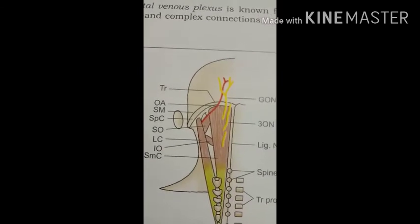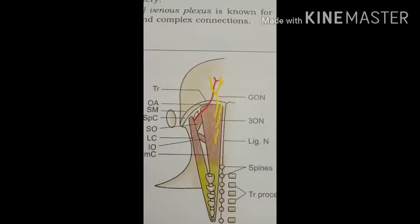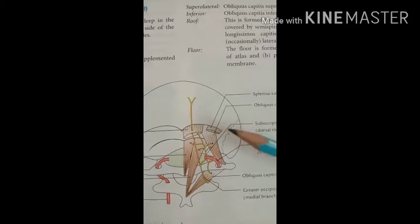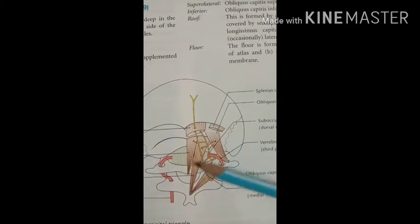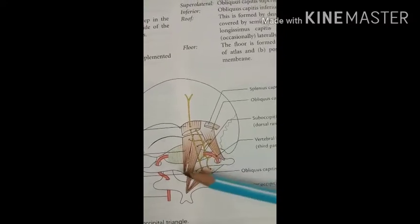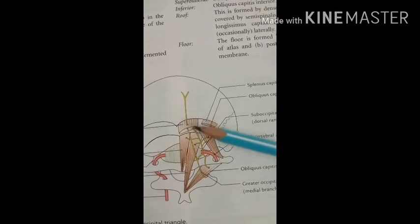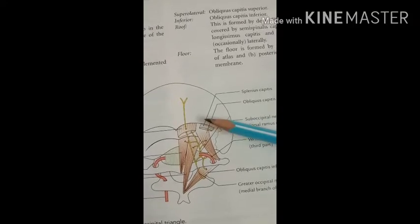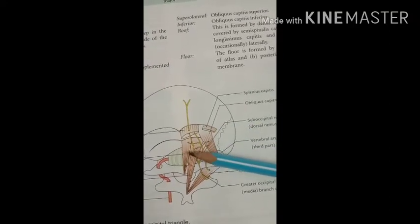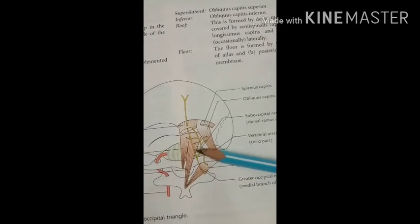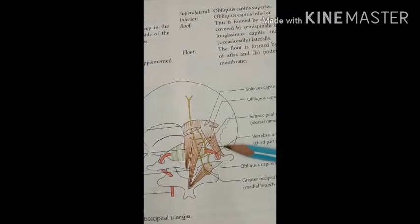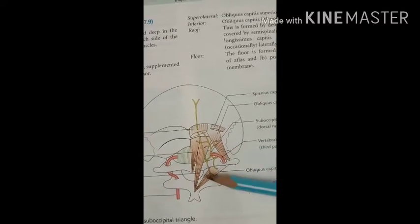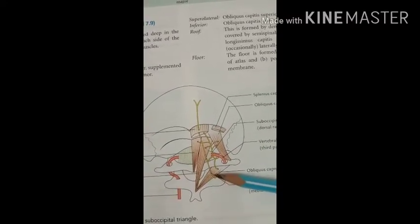After reflection of these two muscles, you observe the sub-occipital triangle. This is the sub-occipital triangle — it is a triangular structure. Superomedially it is bounded by two muscles: the rectus capitis posterior major and rectus capitis posterior minor. Superolaterally it is formed by the obliquus capitis superior, and inferiorly it is bounded by the obliquus capitis inferior.